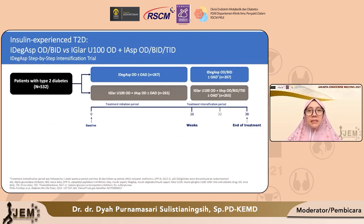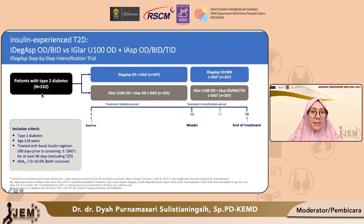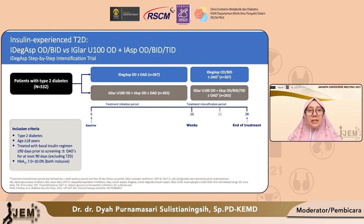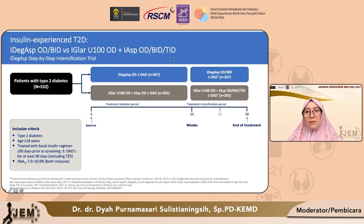Terkait dengan intensifikasi insulin IDeg-Aspart menjadi dua kali sehari, ada studinya yaitu step-by-step intensification trial. Studi ini melibatkan pasien diabetes tipe 2 yang sudah mendapatkan terapi insulin basal minimal 3 bulan. Pasien dibagi menjadi dua kelompok: kelompok pertama mendapatkan insulin IDeg-Aspart dengan tetap melanjutkan OAD, dan setelah 26 minggu IDeg-Aspart-nya bisa dinaikkan menjadi dua kali sehari. Kelompok kedua mendapatkan insulin Glargine ditambahkan dengan insulin Aspart satu kali sehari dan OAD, dengan intensifikasi berupa tambahan insulin Aspart dua kali atau bahkan tiga kali sehari dalam regimen basal bolus.